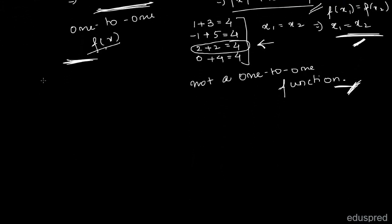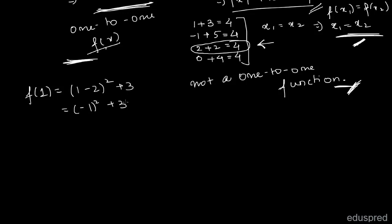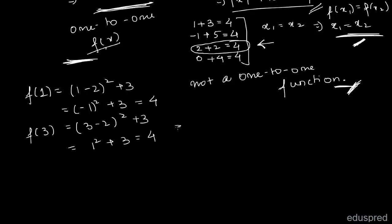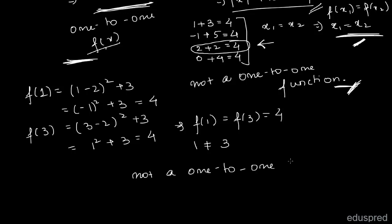You can also validate your answer by taking two random values such that f(x1) equals f(x2). Let x1 equal 1: that gives (1 minus 2) whole square plus 3, which is (minus 1) squared plus 3, equal to 4. Let x2 equal 3: that gives (3 minus 2) whole square plus 3, which is 1 squared plus 3, equal to 4. So f(1) equals f(3) equals 4, but 1 is not equal to 3. Thus this function is not a one-to-one function.